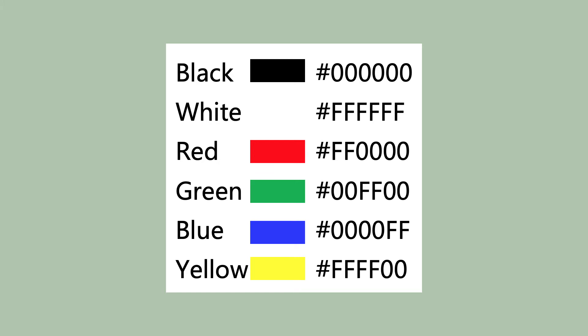You might see shortened hexadecimal codes. For example, black and white can be shortened to just three zeros or three Fs.